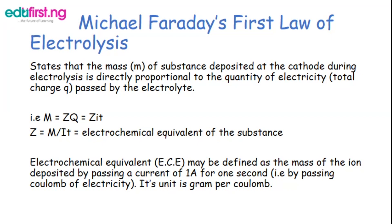Rearranging gives z = m / (It), where z is the constant of proportionality called the electrochemical equivalent of the substance. The electrochemical equivalent (z) is defined as the mass of the ion deposited by passing a current of one ampere for one second — that is, by passing one coulomb of electricity. Its unit is grams per coulomb.